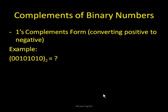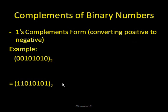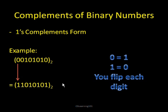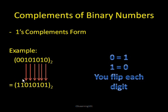There are two complement forms we're going to talk about. The first is the ones complement form — this is a method to convert a positive binary number to a negative number. So I converted the number 00101010 to 11010101. Ones complement means you take every binary digit and flip it to the opposite. So if the first digit is 0, I change it to 1. If I have a 1, I change it to 0. And so on.